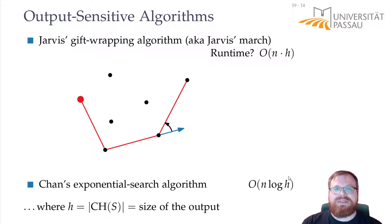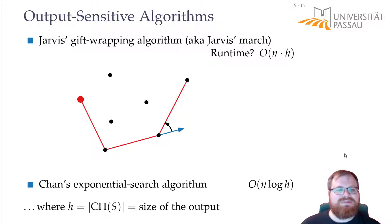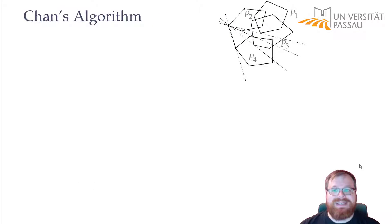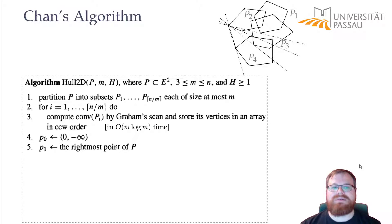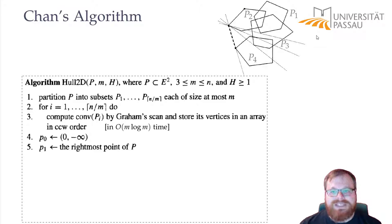The algorithm Chan found is very elegant but also quite complicated, especially for a first lecture. Roughly, it works as follows: he takes the input set and divides it into many small sets. He takes some value m and makes n/m sets, each of size m — so in the example, many sets of size 5. For each of these sets, he uses Graham's scan, the O(n log n) algorithm, to compute a convex hull, taking O(m log m) time.